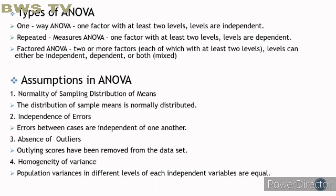Types of ANOVA. One-way ANOVA has one factor with at least two levels, and the levels are independent. Repeated measures ANOVA also has one factor with at least two levels, but the levels are dependent.